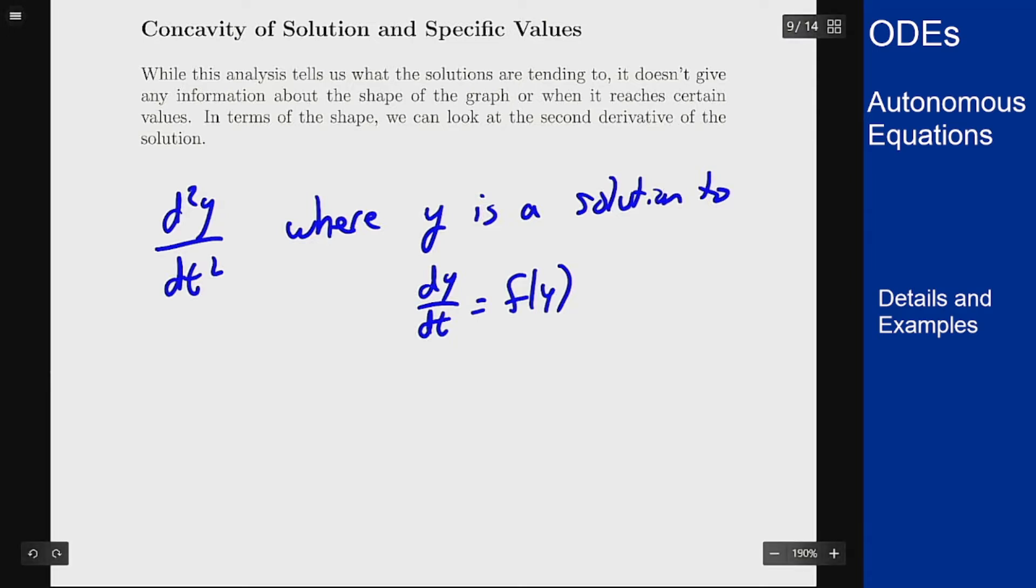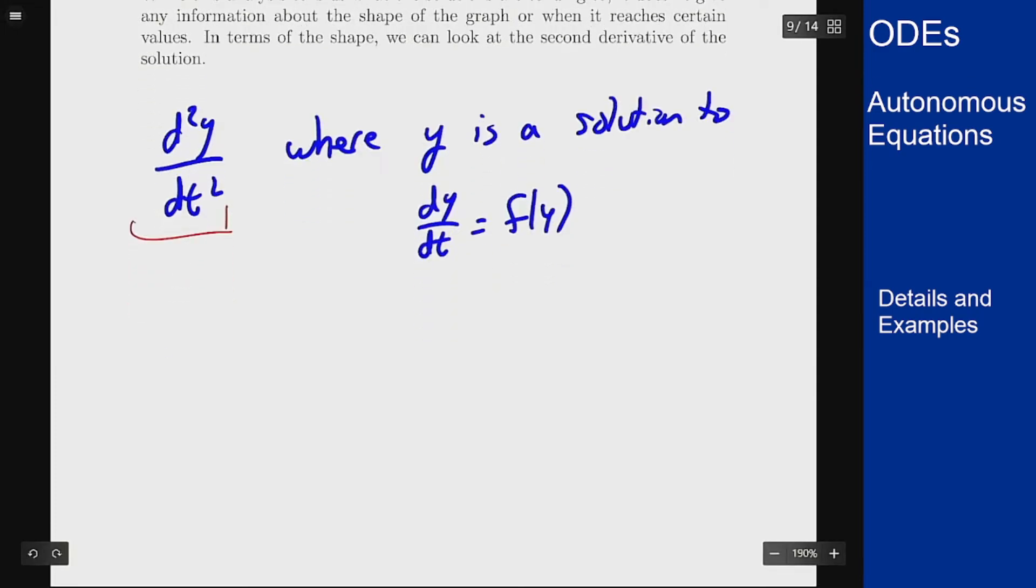Now I can write this derivative out by taking the derivative of the derivative and see what happens. This is the same thing as the derivative in t of dy dt, but that's f of y. Now y is a function of t so I can work out this derivative but it has to be done by the chain rule. This would give me f prime of y times dy dt, but dy dt is just f.